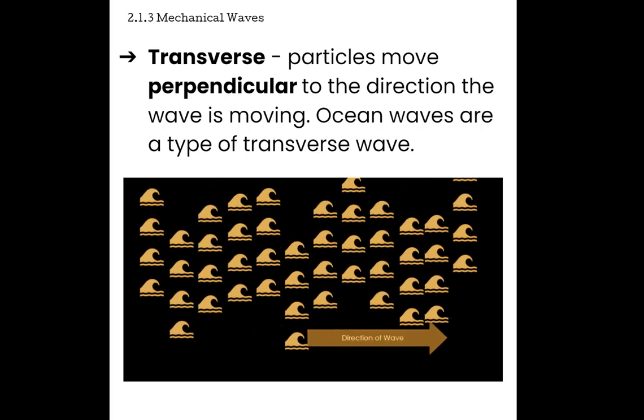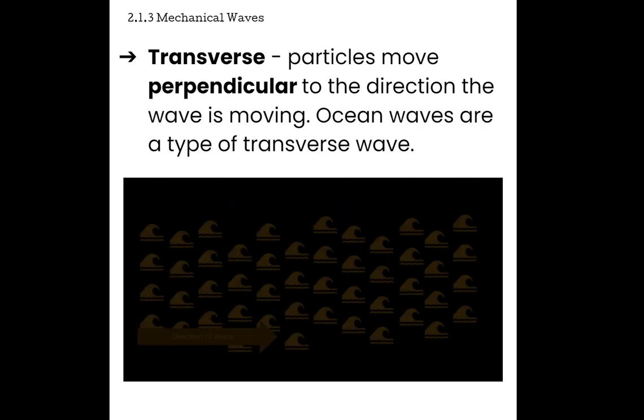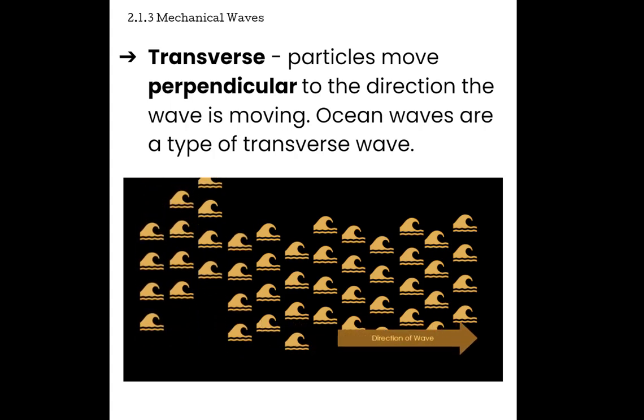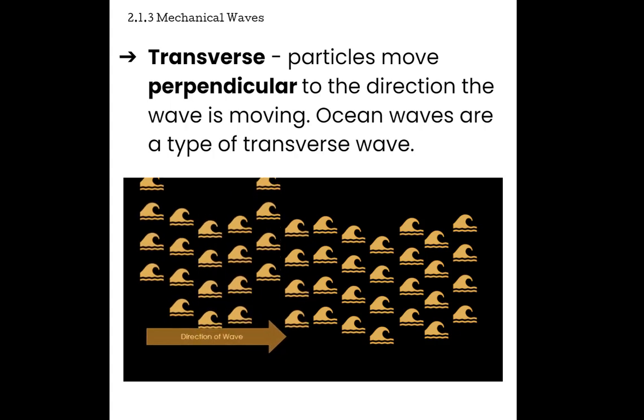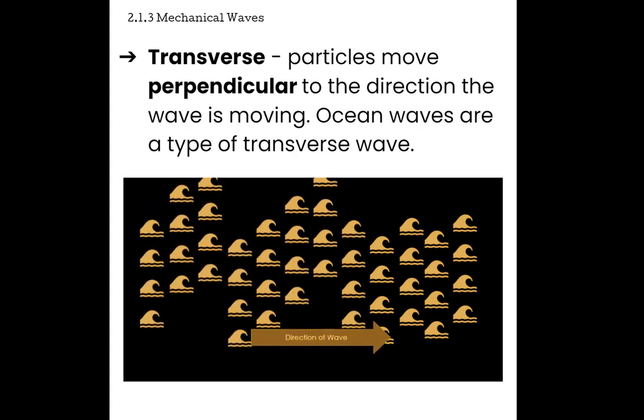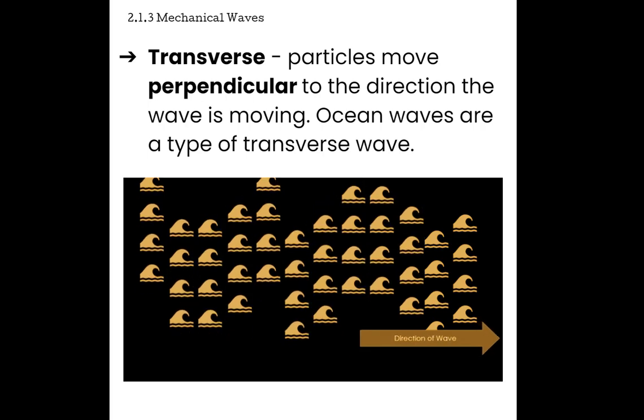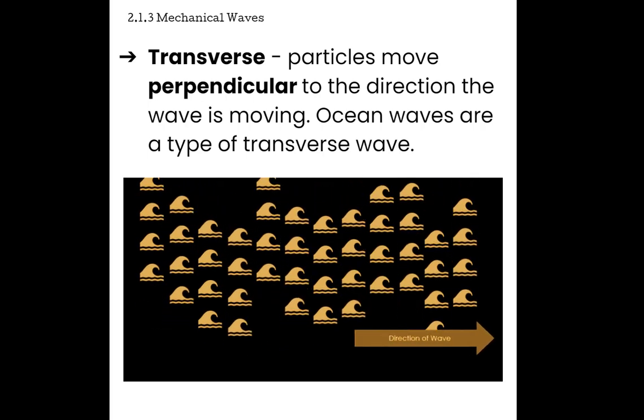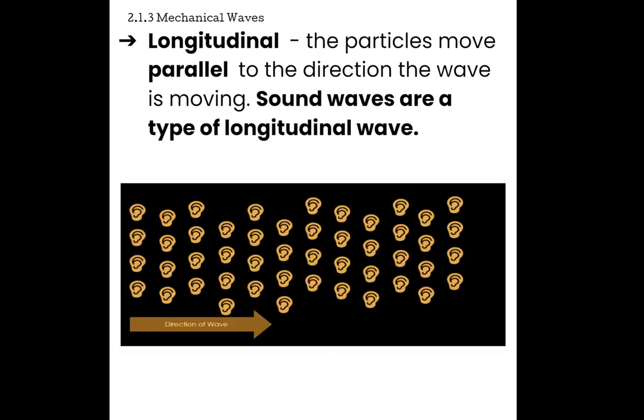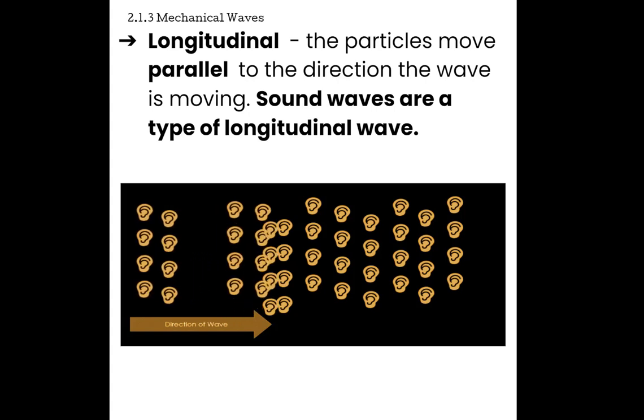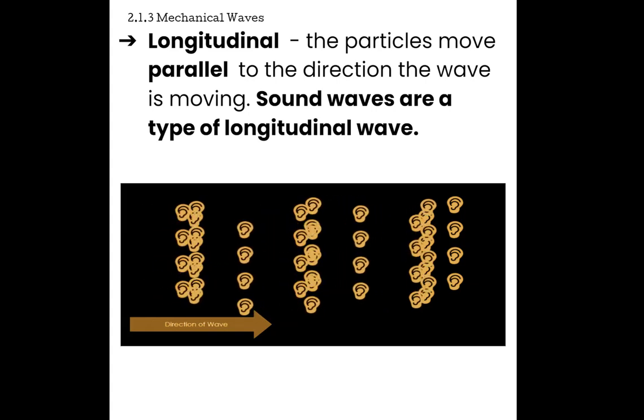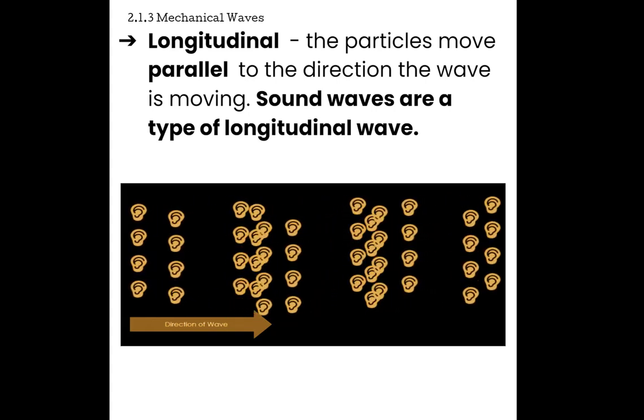Mechanical waves require a medium to propagate or transfer energy through. The particles within the medium are going to move as the energy interacts with them. The first type of mechanical wave is a transverse wave. This is where particles will move perpendicular to the direction that the wave is moving. Ocean waves are a type of transverse wave. The second type of mechanical wave is a longitudinal wave. This is where the particles will move parallel to the direction the wave is moving. Sound waves are a type of longitudinal wave.